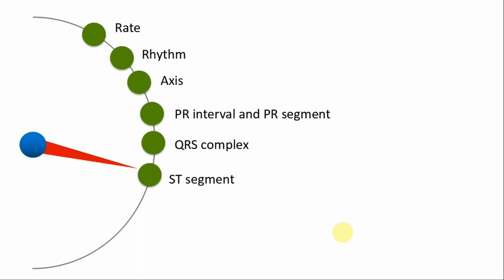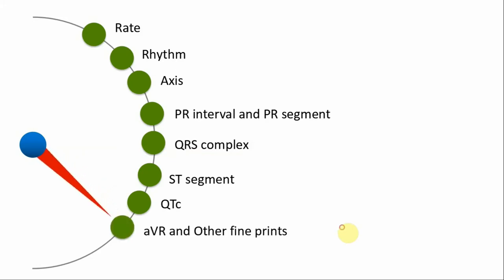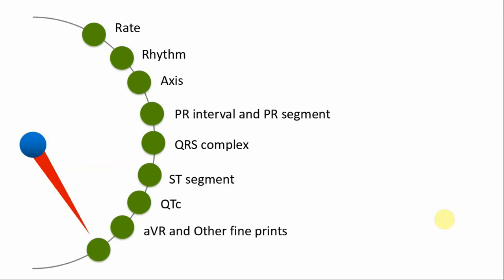Of course you need to look at the ST segment: is it isoelectric, elevated, or depressed? Do you need to activate the catheter lab for ST elevation, or treat for myocardial ischemia without STEMI? Then look at the QTc — from the beginning of the QRS complex to the end of the T wave, corrected for ventricular rate. Many people forget to look at AVR and other fine prints like R-wave progression in V3. When you look at all these things, combine them together, compile all the information, get an interpretation, and correlate with the patient's condition to find management options.